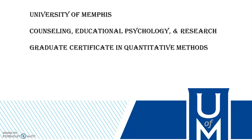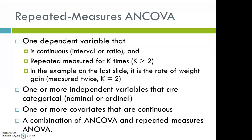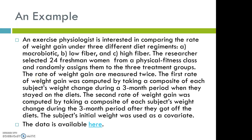Hi, this is Jade Xu from the University of Memphis. In this video I'm going to show you how to run repeated measure ANCOVA with an example. A total of 24 participants were put onto three different diet regimens and their rate of weight gain were measured twice — once during the three months when they are on the diet, and the second time was the rate of weight gain after three months off the diet. Their initial weight was used as a covariate.